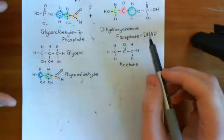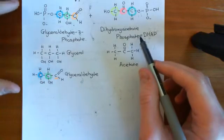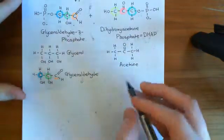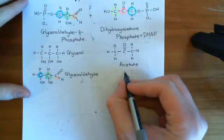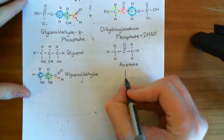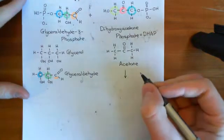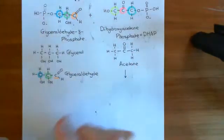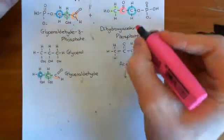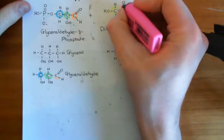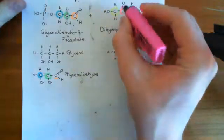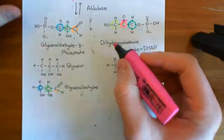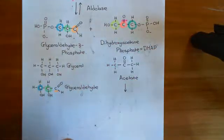The first thing that's going to happen is the dihydroxyacetone phosphate is going to be turned into another molecule of glyceraldehyde-3-phosphate. What we can imagine doing — and again, this isn't a molecular mechanism — is breaking the two bonds between this carbon and this oxygen atom here in the dihydroxyacetone phosphate molecule.